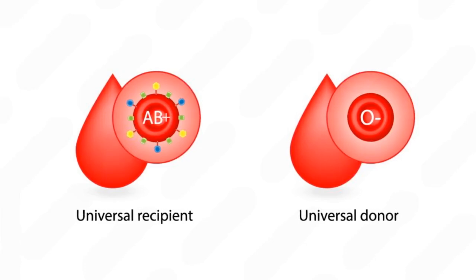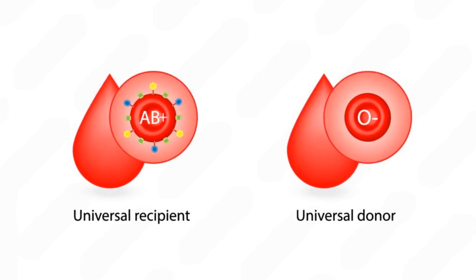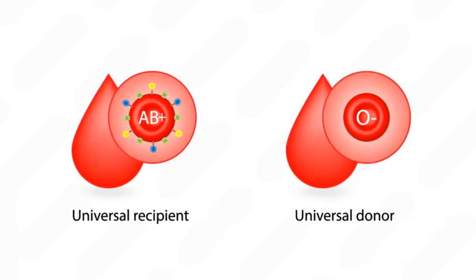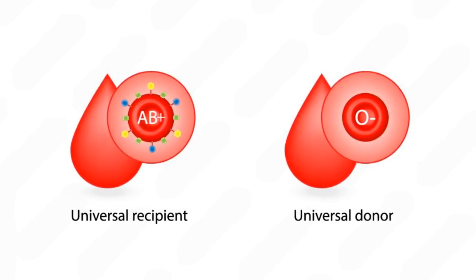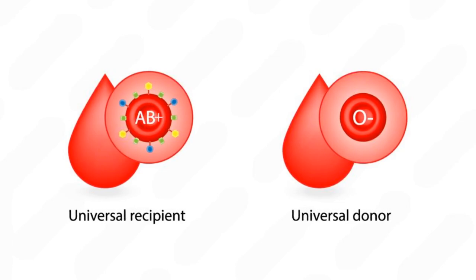Number 8. Which blood type is the universal recipient? The universal recipient blood type is AB positive. This is because AB positive blood has both A and B antigens on red blood cells and no antibodies against A, B, or RH antigens in the plasma. This means AB positive individuals can safely receive blood from all types — A, B, AB, and O groups — regardless of the RH factor.